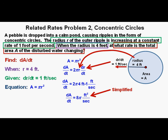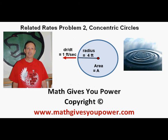This wasn't too hard, was it? This has been Related Rates Problem 2, Concentric Circles. Thanks for viewing.